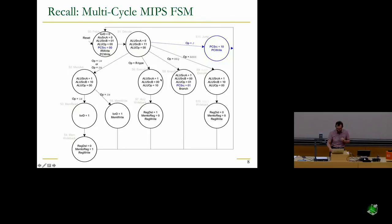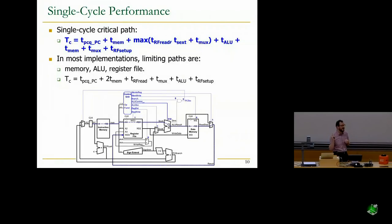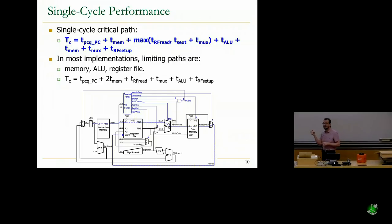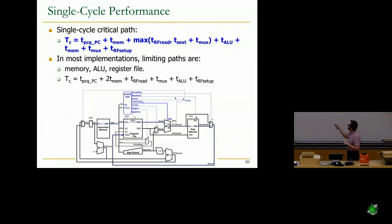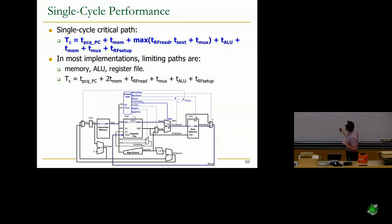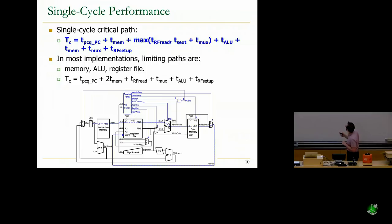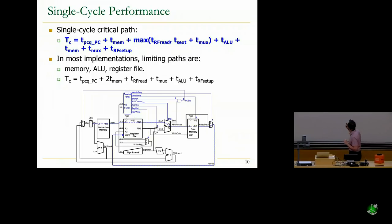Let's do some performance analysis quickly. This is the single-cycle machine we designed. Every instruction takes a single cycle, so CPI is always one. Clock cycle time is determined by the longest critical path latency — which goes through reading the program counter, accessing instruction memory, register file read, sign extension, MUXing, ALU latency, memory latency, MUX latency, and register file setup. That happens for a load instruction, which is the longest latency instruction. Assuming fixed latencies, the critical path latency is 925 picoseconds.